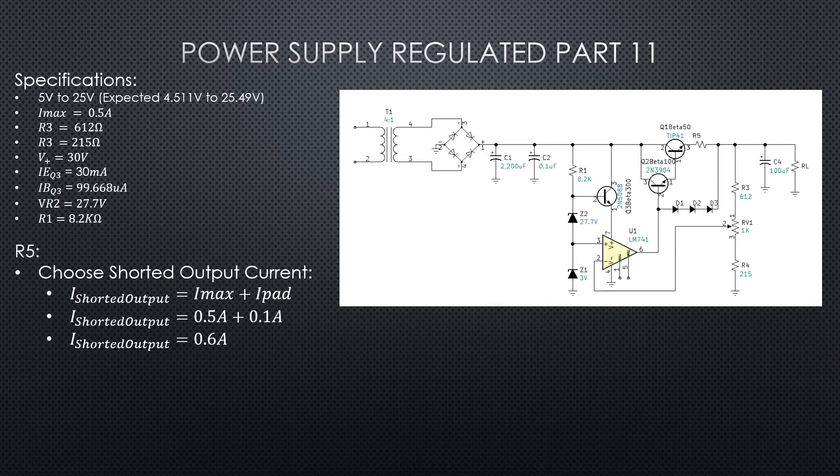You can see I've labeled this as the I shorted output, so if someone comes up and ties that output straight to ground, shorts our output, we want that current to be limited or regulated by our fixed limiting circuit. So what I'm doing is we're going to take our Imax, the current that we want to be able to run out, and we're going to add a little bit of padding or cushion to that. I just added 0.1 amp. For this example we're going to define the output shorted current as 0.6 amps.